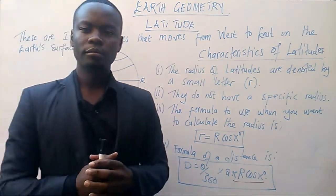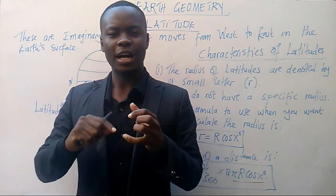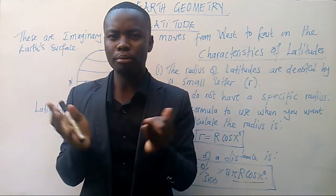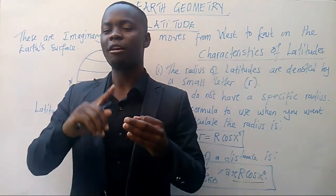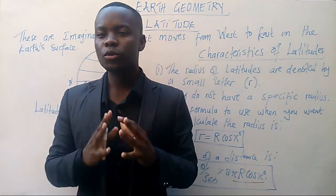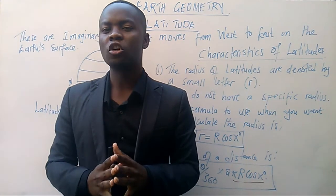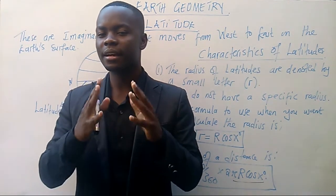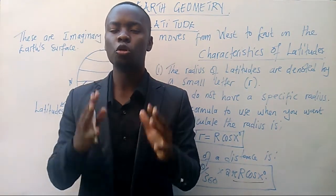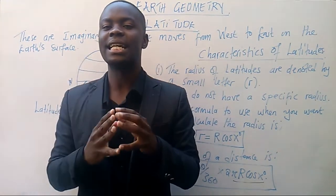In this video, I've introduced you to the concept of latitude, of which we have defined latitudes. I've also showed you how latitudes move on the globe. Thereafter, we have discussed characteristics of latitudes, in which we say that latitudes are represented by a small letter r, they don't have a specific radius, meaning that you must calculate their radius. We also covered the radius formula and the distance formula to use when you want to calculate the radius and the distance, respectively.